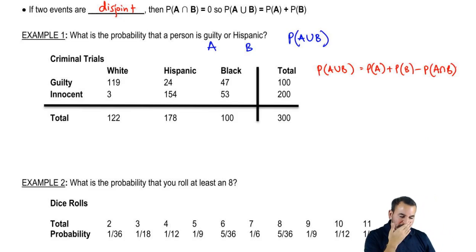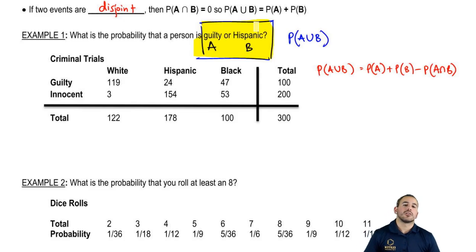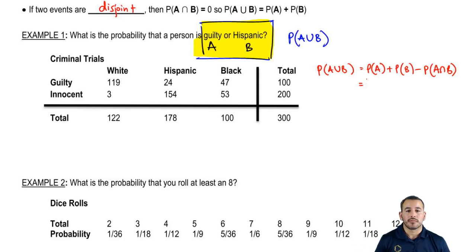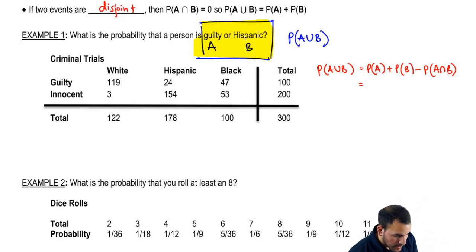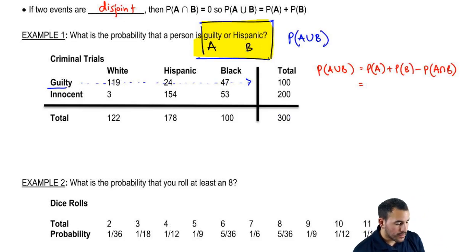What's probability of A? Probability of A is the probability of someone being guilty. Probability of A is essentially how many people are guilty divided by the total number. So we're looking for guilty — there are 119 that are white, 24 that are Hispanic, for a total of 100 people that are guilty, out of 300 total. There are 100 people who were guilty and 200 that were innocent, for a total of 300.